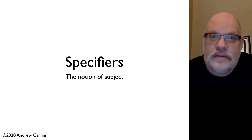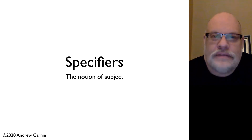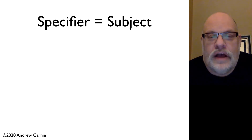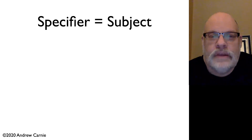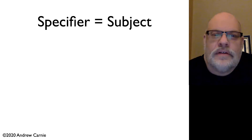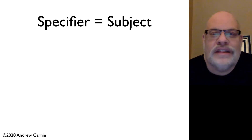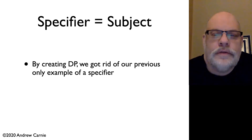But then in this chapter, what we've seen is that determiners are not, in fact, specifiers either. We got rid of our basic notion of what could possibly be in a specifier position. So do we need these positions or not? There are good arguments to think that we do, in fact, need specifier positions — they're where we put subjects or subject-like elements into phrases.